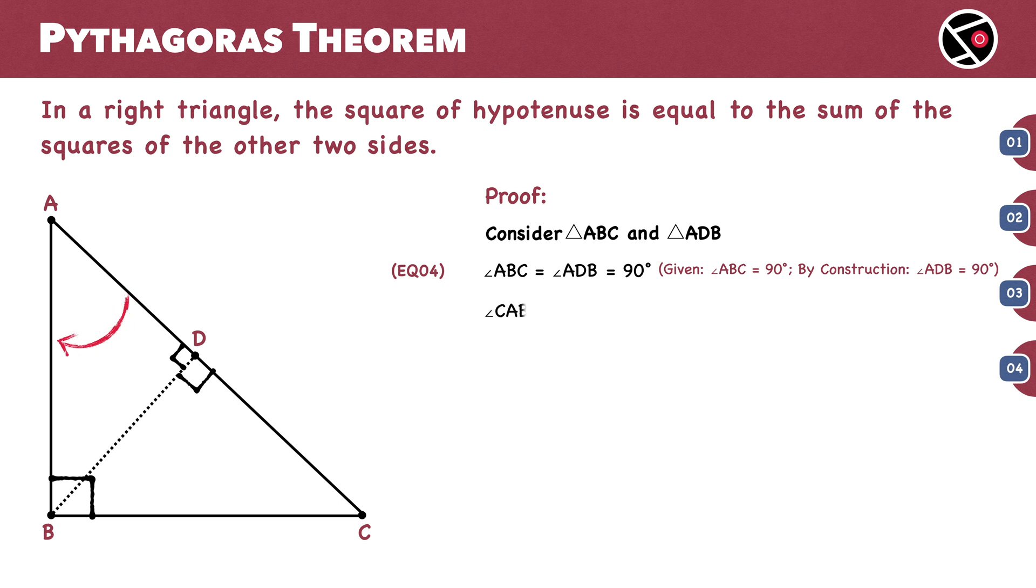Angle CAB equals angle BAD. Common angle. This is equation 5. With two pairs of equal corresponding angles, by the AA criterion for similarity, triangle ABC is similar to triangle ADB.